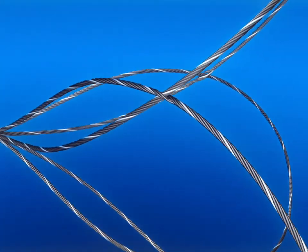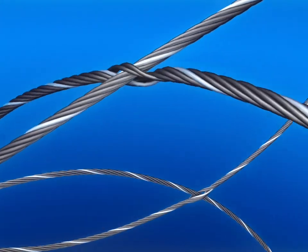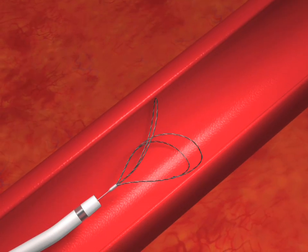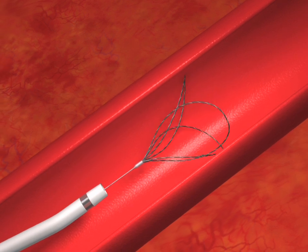The loops of the N-Snare are interlaced for structural integrity and are self-sizing for excellent vessel coverage.